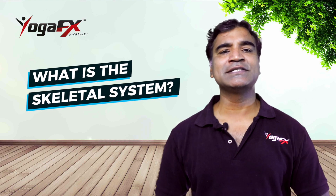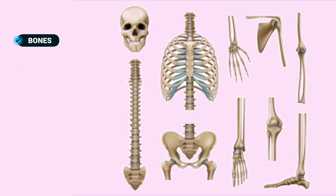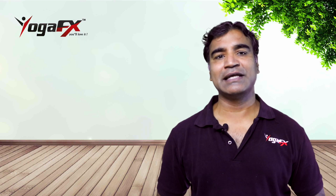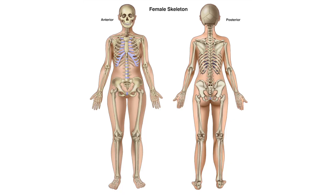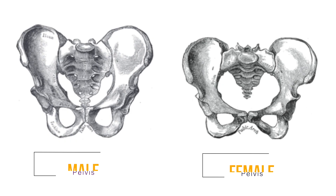The human skeletal system consists of all of the bones, cartilage, tendons, and ligaments in the body. Altogether, the skeleton makes up about 20% of a person's body weight. An adult's skeleton contains 206 bones. Children's skeletons actually contain more bones because some — including those of the skull — fuse together as they grow. There are also some differences in the male and female skeleton: the male skeleton is usually longer and has higher bone mass.